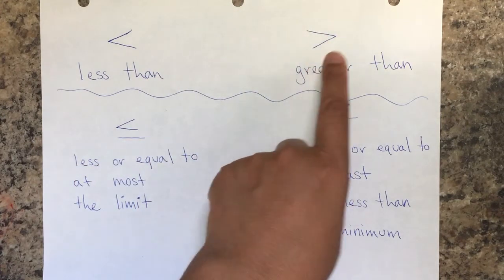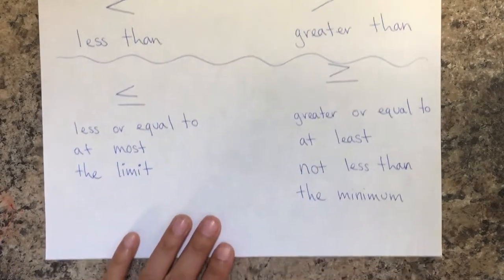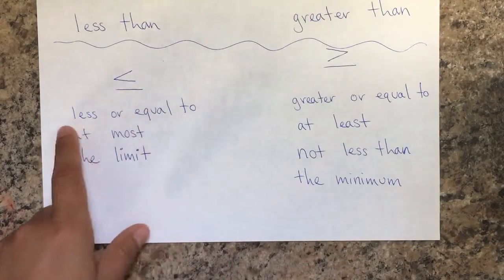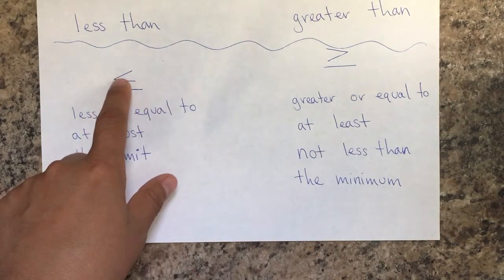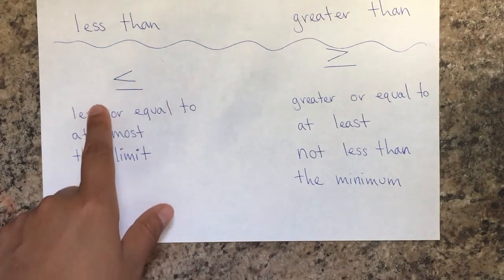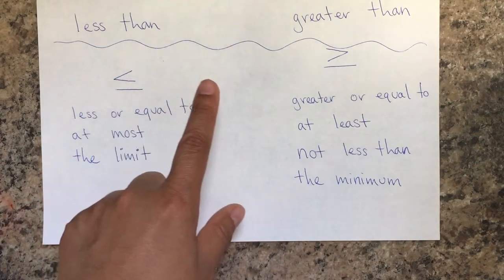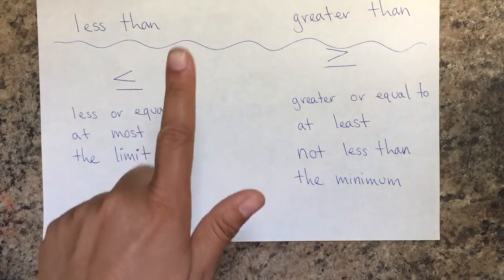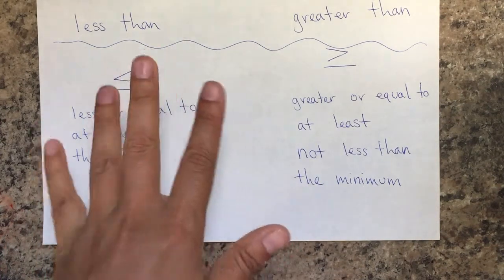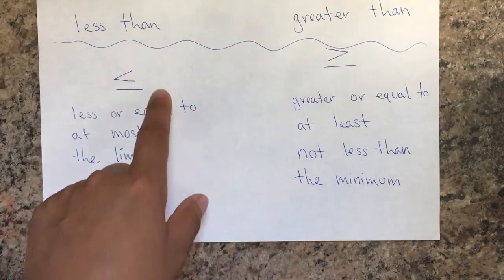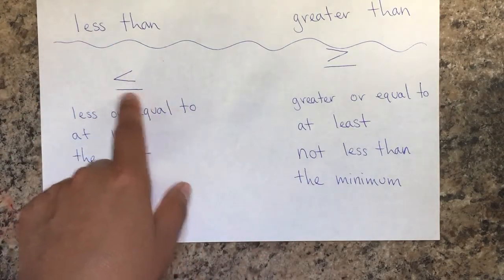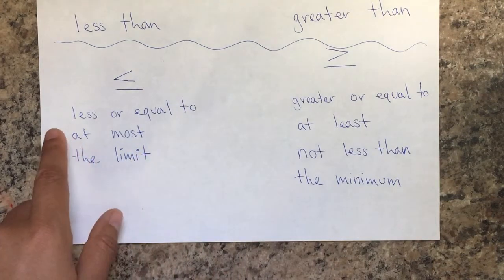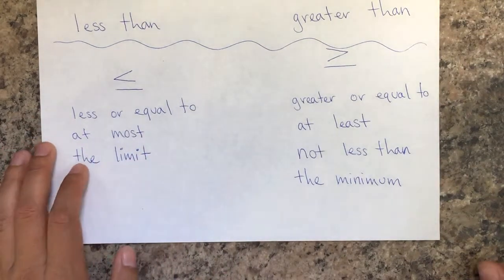Sometimes we have the less than or equal to symbol. If it says less than or equal to five, then five is included — four, three, two, one, et cetera. The equal sign means that it includes the number you are talking about.